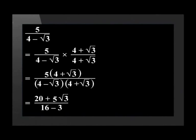On top, 5 times 4 is equal to 20 and 5 times the square root of 3 is equal to 5 square root 3. The denominator is 16 minus 3.